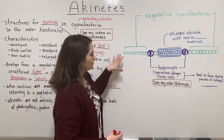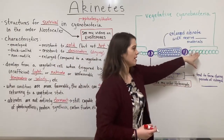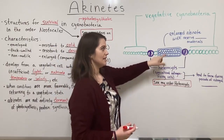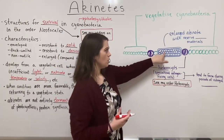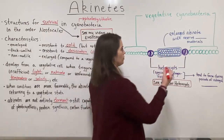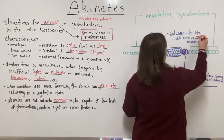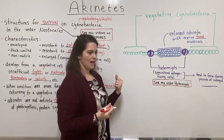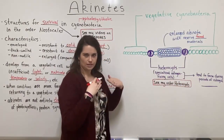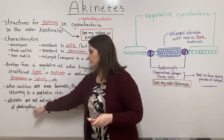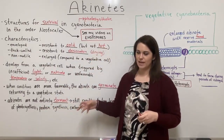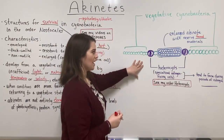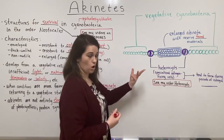Looking at the diagram: the green cells are the vegetative cyanobacteria, and the blue is the enlarged akinete. All of those little circles inside represent the reserve food materials held in reserve. Even though a low level of metabolic activity is happening, the akinete is really trying to save those nutrient stores for long-term survival.